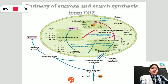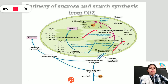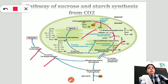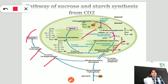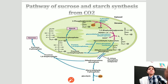Dihydroxyacetone phosphate is also irreversibly transferred into the cytosol, where it is converted into glyceraldehyde 3-phosphate, which is involved in glycolysis. Dihydroxyacetone phosphate and glyceraldehyde 3-phosphate combine to form fructose 1,6-bisphosphate, which is then converted into fructose 6-phosphate and ultimately into sucrose — the transport form of carbohydrate.